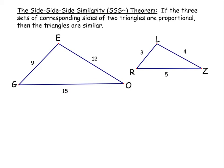The next way to prove triangles are similar is the side-side-side similarity theorem, abbreviated side-side-side similarity. This says that if the three sets of corresponding sides of two triangles are proportional, then the triangles are similar. Matching shortest to shortest and largest to largest, we get ratios 9 to 3, 12 to 4, and 15 to 5 — all reducing to 3 to 1.